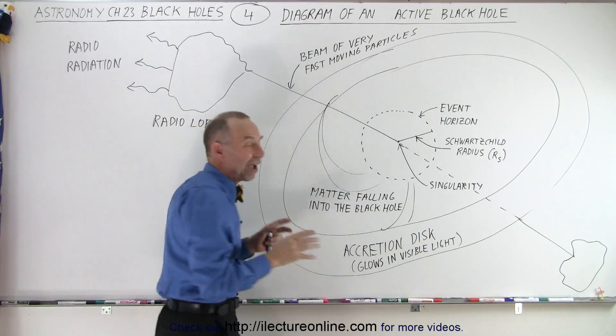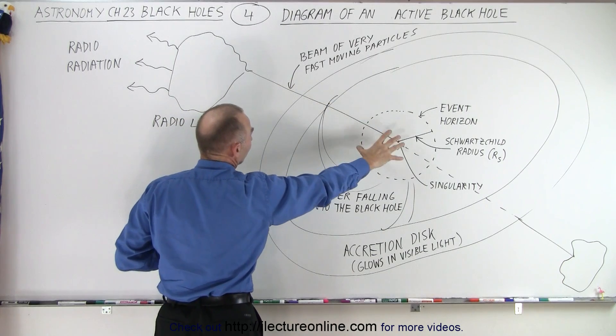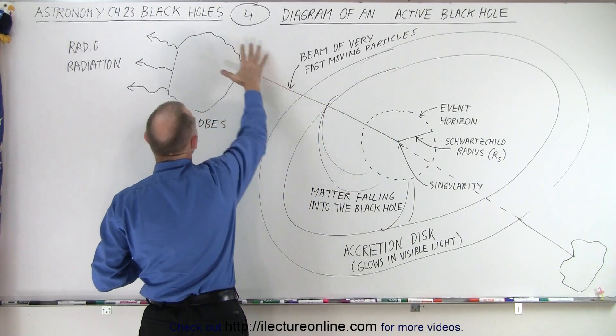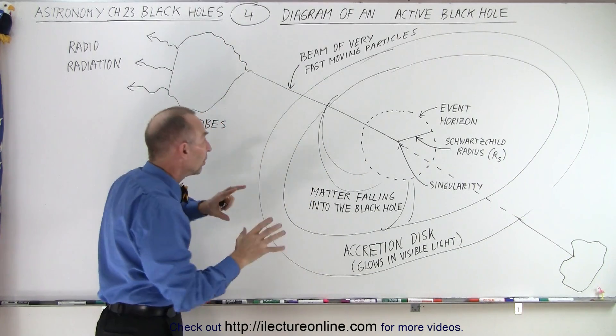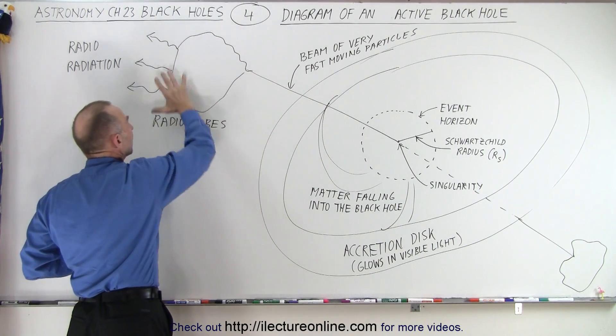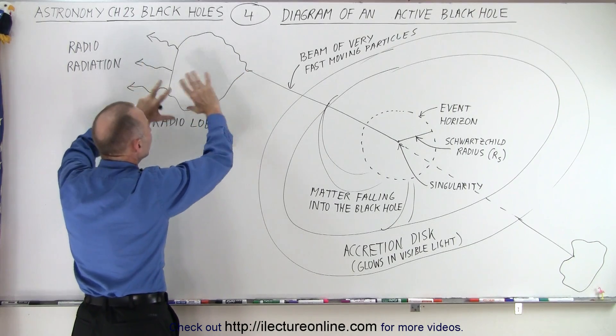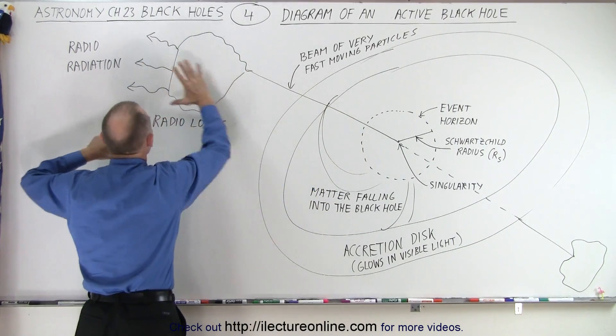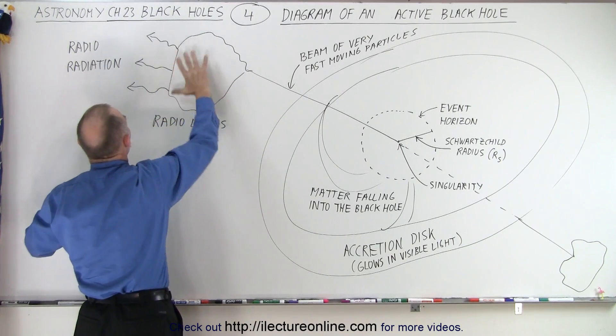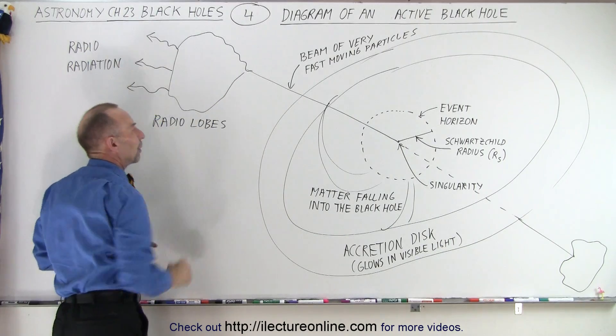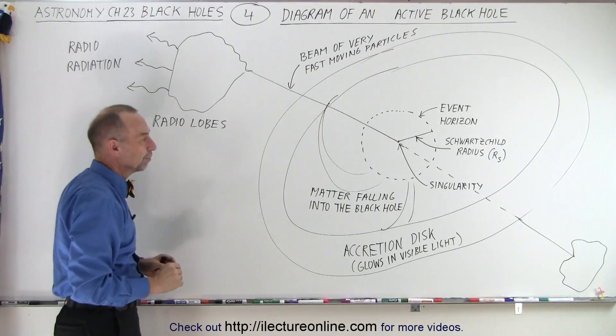These are beams of very fast moving particles. Eventually, as they get far enough away and the gravitational forces of the black hole diminish, they start running into interstellar matter. As they run into interstellar matter, they slow down and they create what we call radio lobes—masses of material that is moving much slower than they were initially. As they bump into the interstellar matter, they form regions where very high doses of radio radiation get emitted from the radio lobes, and that's why they call them radio lobes.